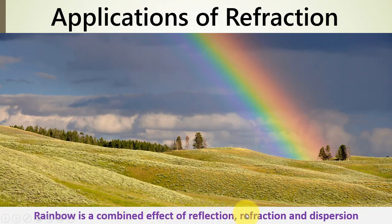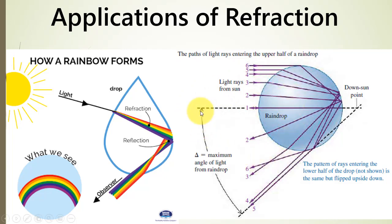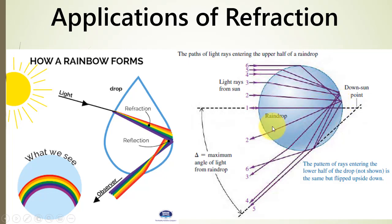A rainbow is a combined effect of reflection, refraction, and dispersion — unlike a prism. When rain stops, some water particles remain in the atmosphere. When the sun is just above the rain drop, it hits the upper part. The very first ray goes perpendicular and comes back along exactly the same line. When a slanted ray comes in, it causes some refraction at one point, then total internal reflection occurs, and another refraction occurs as it exits. So for a light ray hitting the upper part of the rain drop, we have two refractions and one internal reflection.